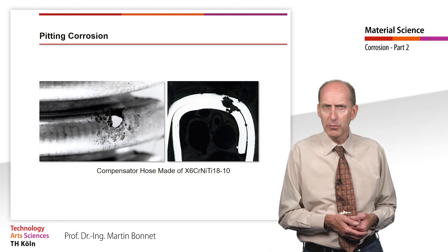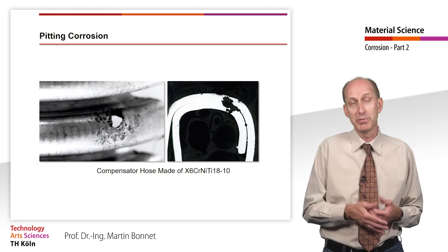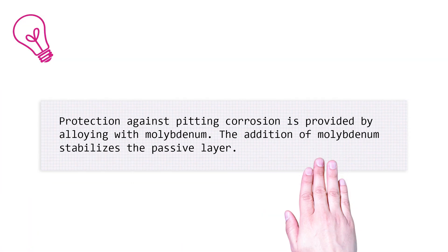The holes may look small on the surface, but in cross-section the severe damage behind the pitting can be seen. The protection against pitting corrosion is provided by alloying with molybdenum. The addition of molybdenum stabilizes the passive layer.